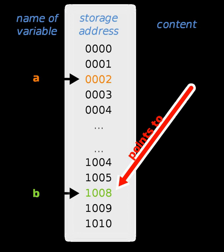Pointers can be used to pass variables by their address, allowing their value to be changed. For example, consider the following C code.